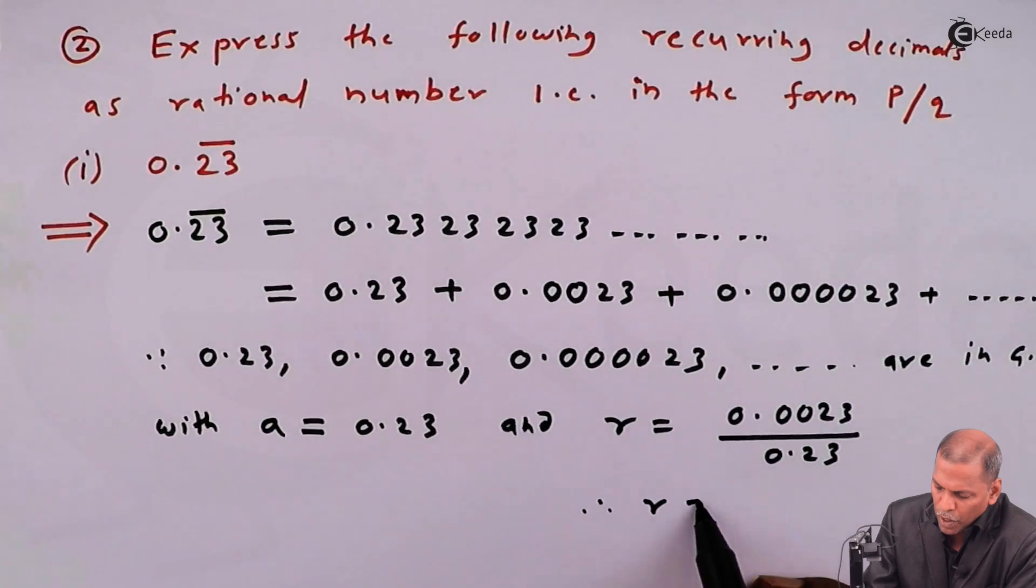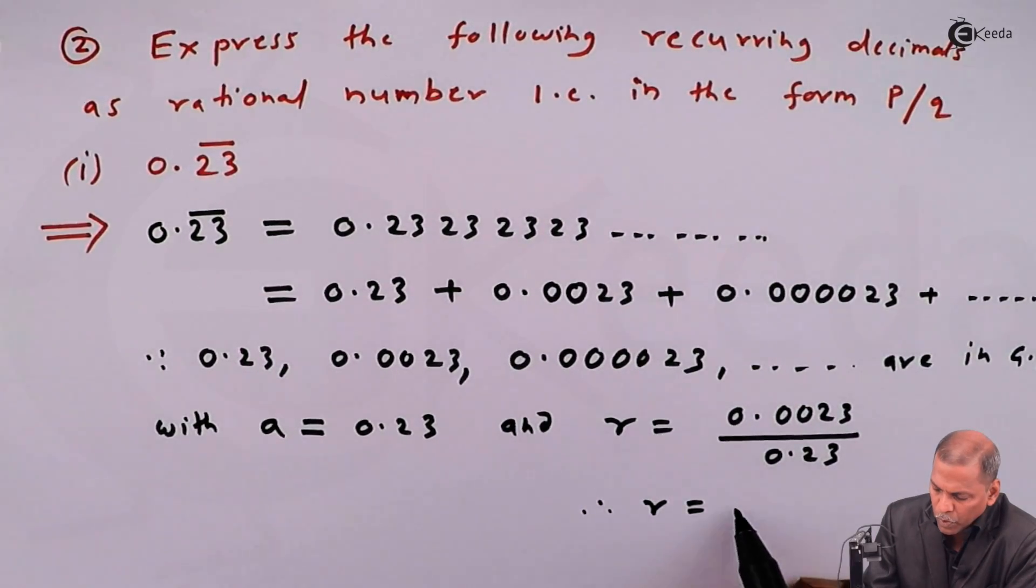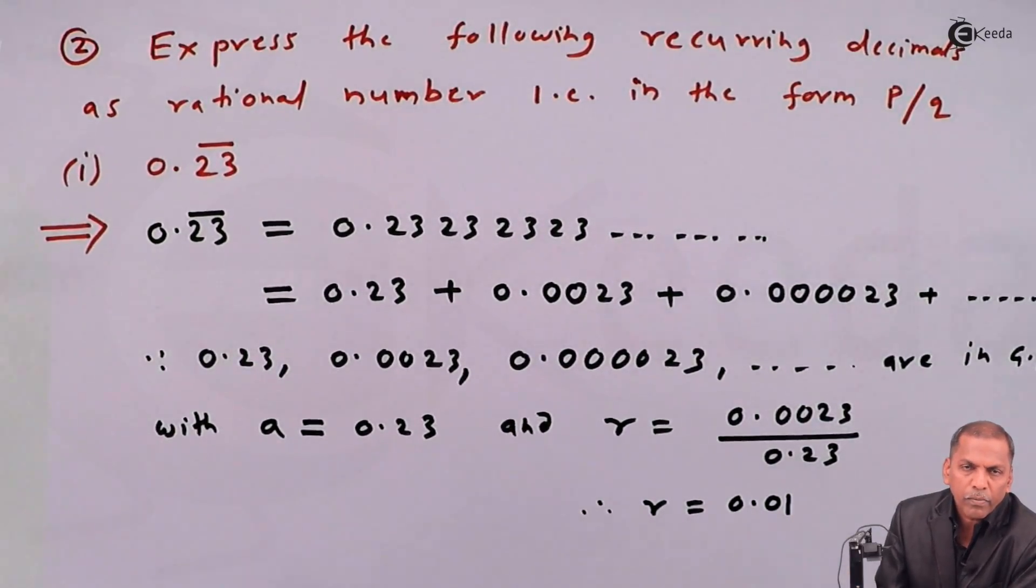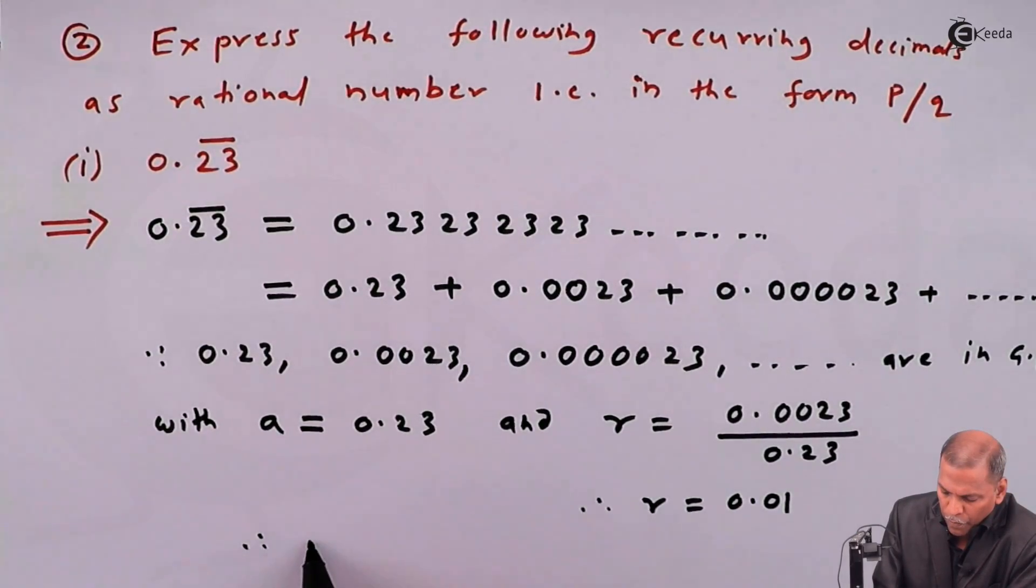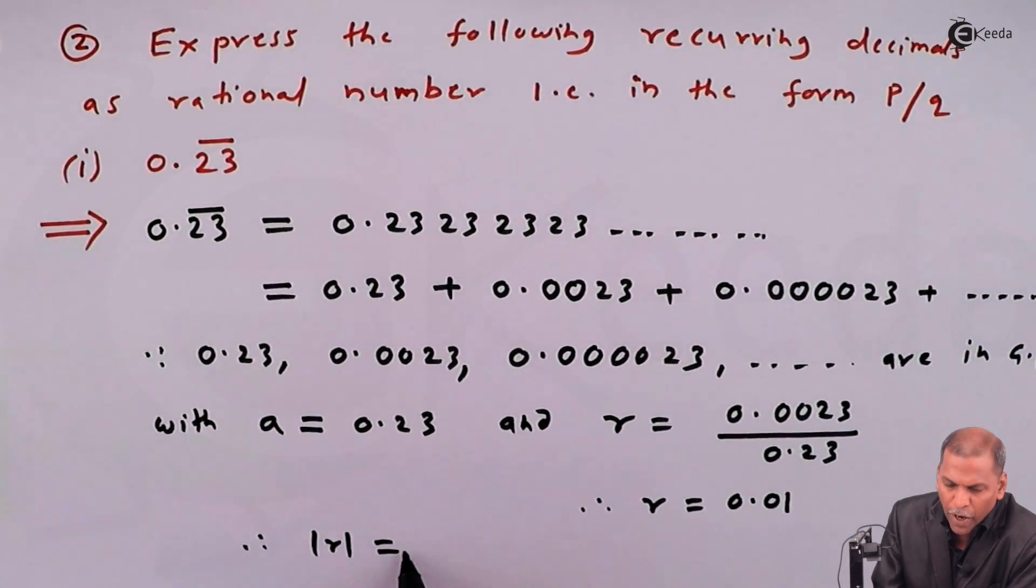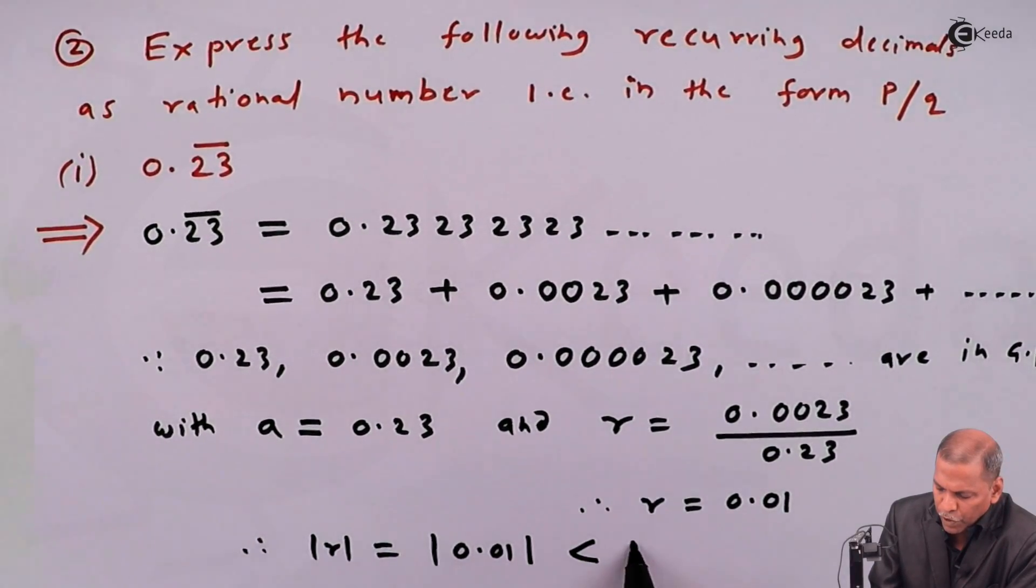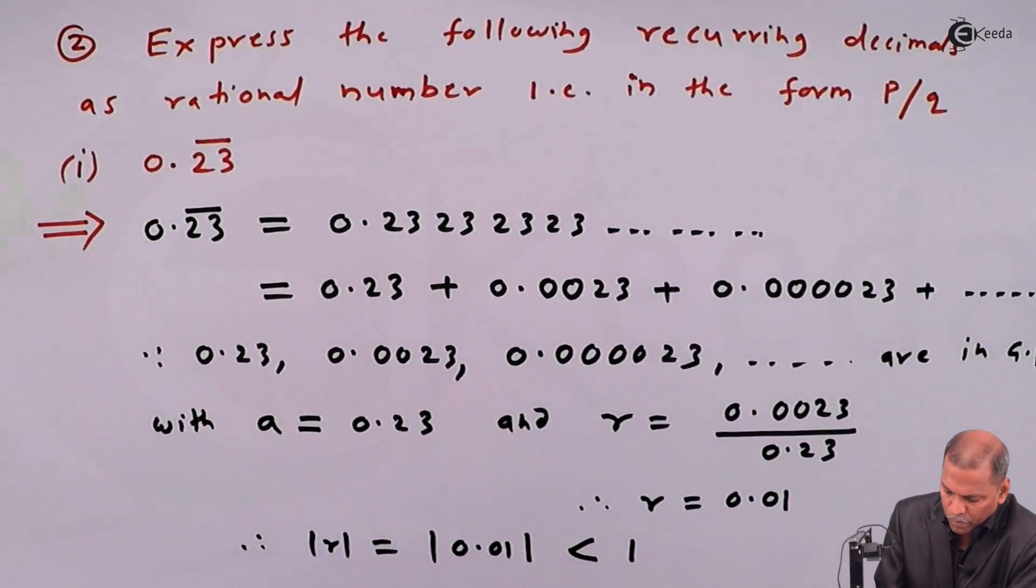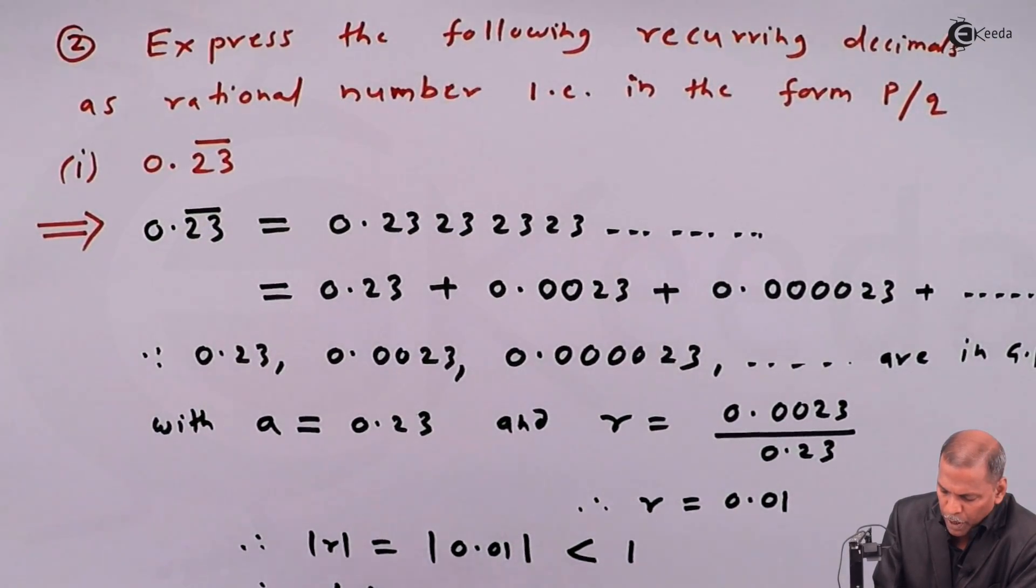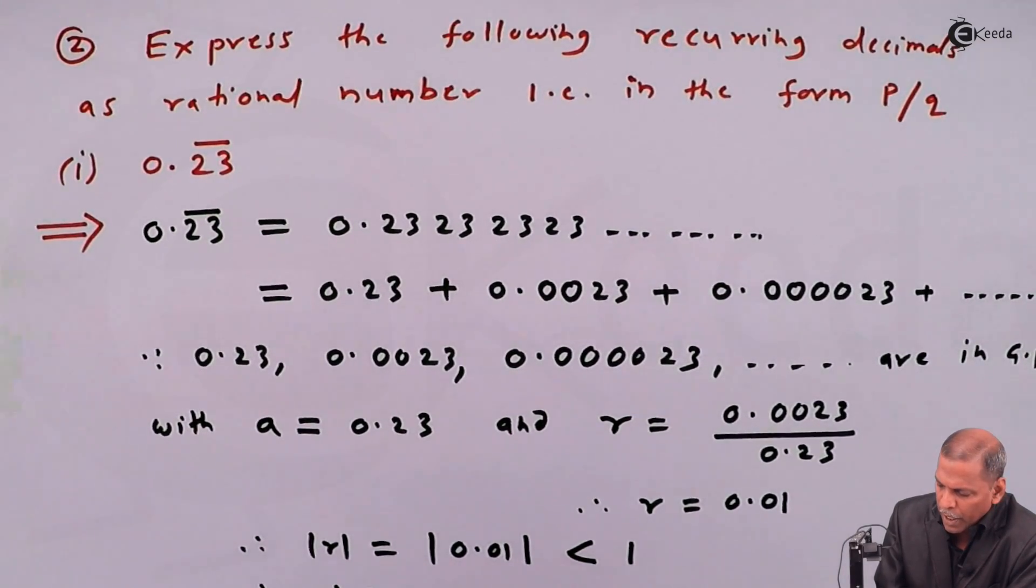Therefore, r is equal to 0.01. Therefore, the modulus of r is equal to modulus of 0.01 which is less than 1. It means the modulus of r is less than 1.